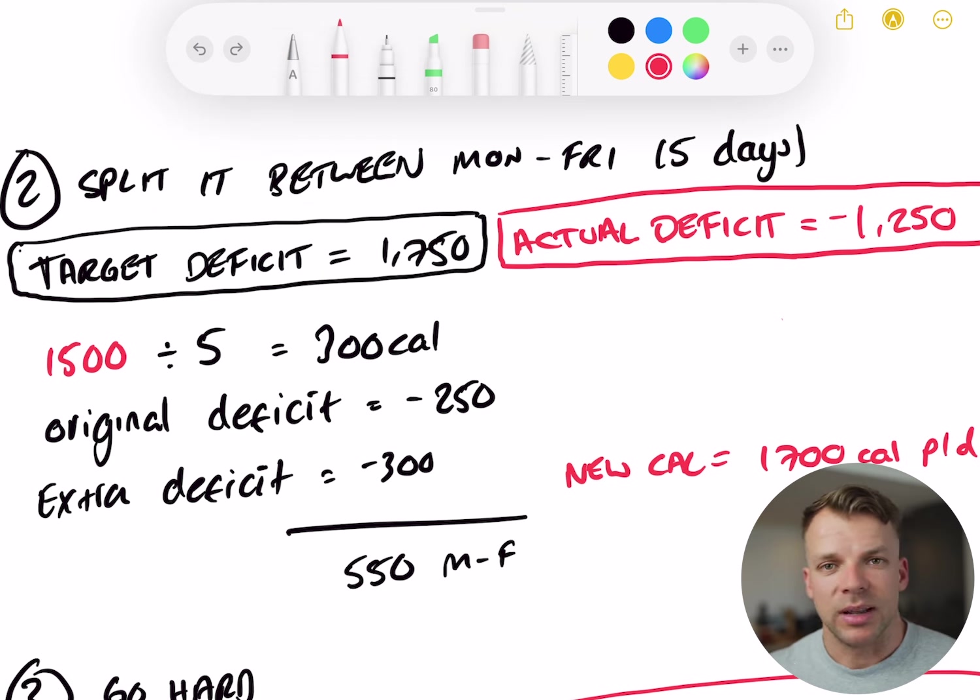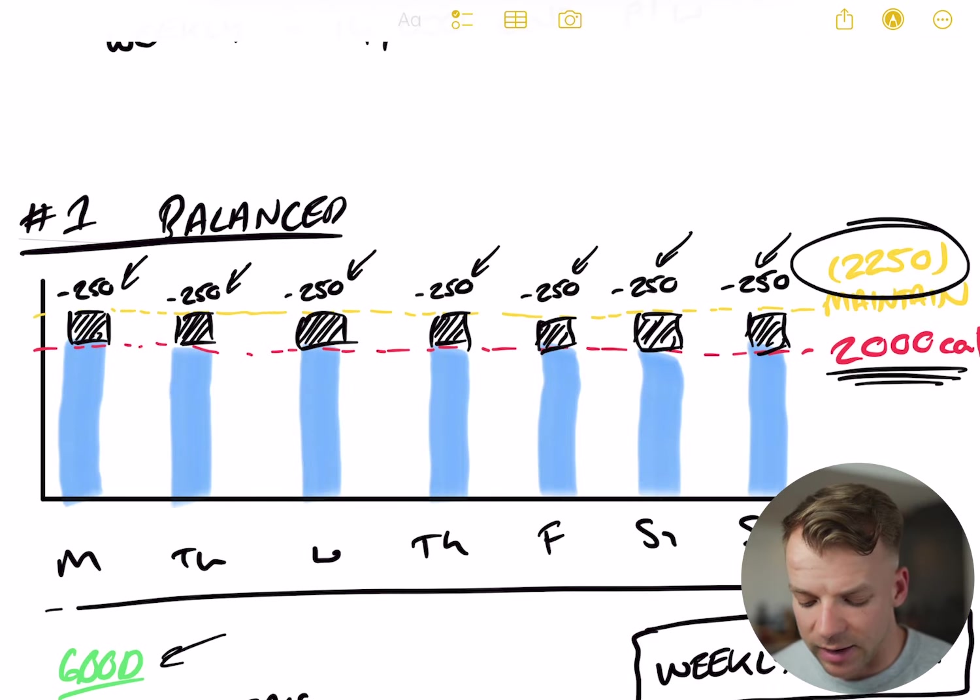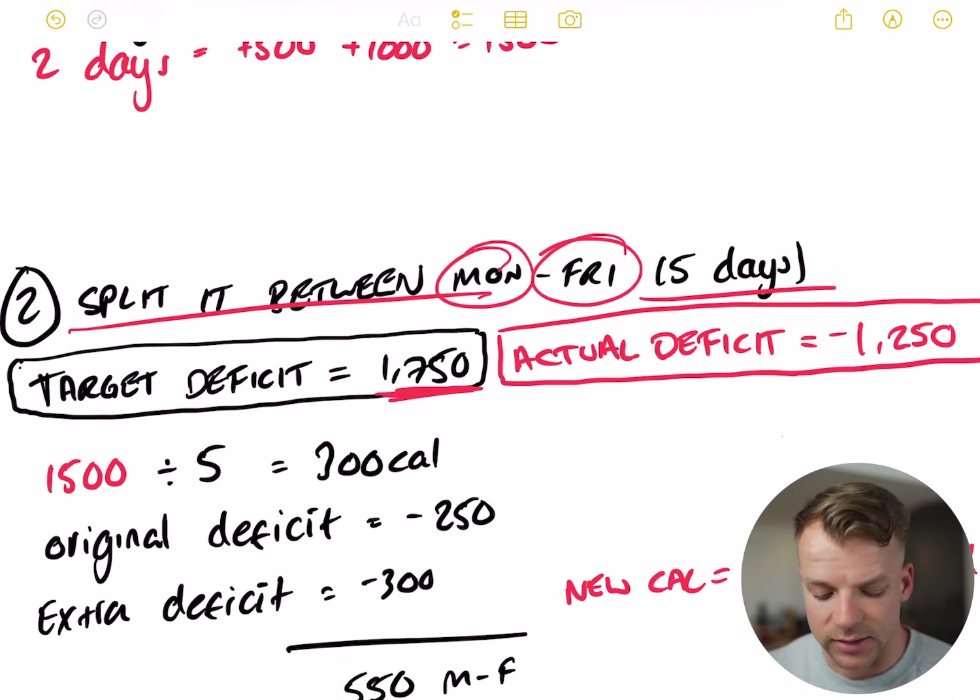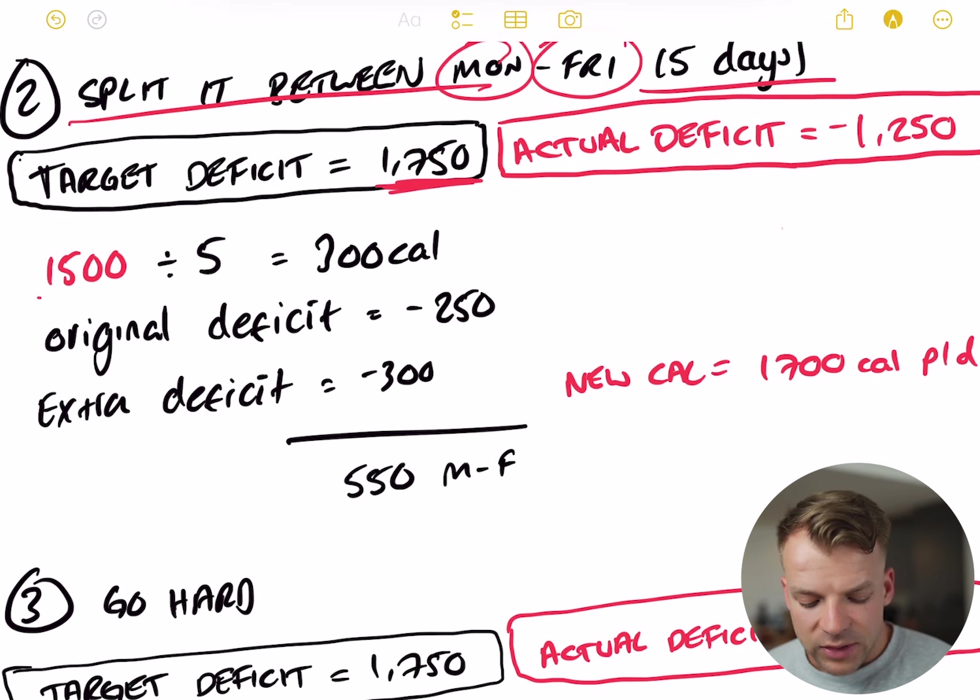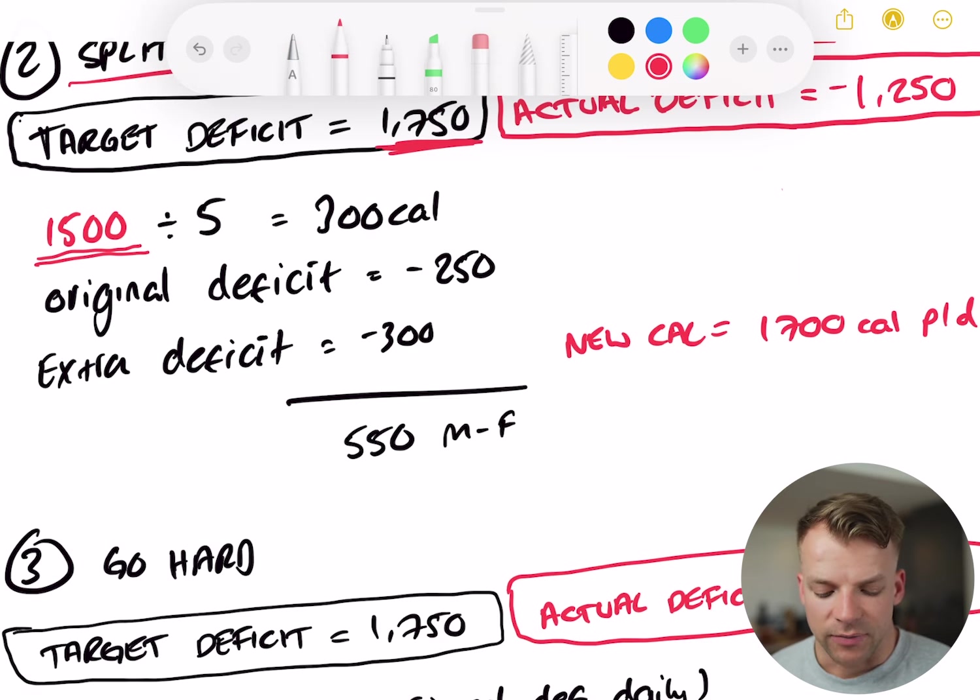Option two is you just split the calories that you will over consume on the weekend and you distribute those throughout the week evenly. So I've called this split between Monday to Friday, which is a five-day week, and achieve a slightly lower deficit. So your target deficit as before is 1,750. If we go back to our boring robotic balanced meal plan, we were achieving a calorie deficit of 1,750 for the week. So that's our target and that's still our target. Now, your 1,500 calorie surplus that you're eating over Saturday and Sunday, you're going to divide that by five. That gets you 300 calories a day.